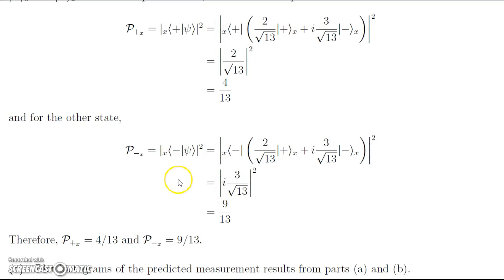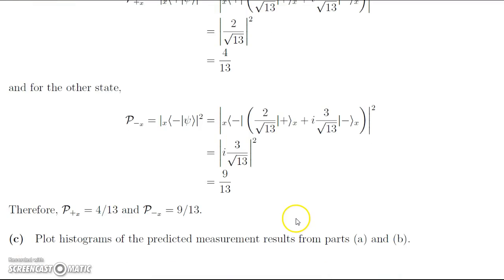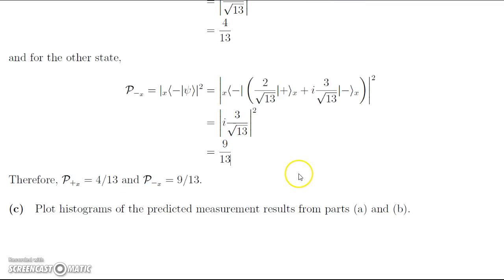Similarly for the other state, we can go through the same process, and we get 9 over 13 as our probability. This verifies that once again we were correct. These do sum to 1, which means that there are exactly two possible states for the system, and we get that the probability of measuring spin up in the x-direction is 4 over 13, and the probability of measuring spin down in the x-direction is 9 over 13.